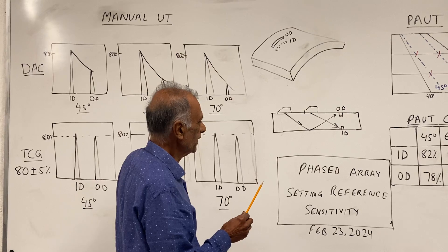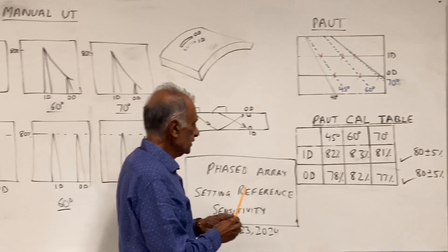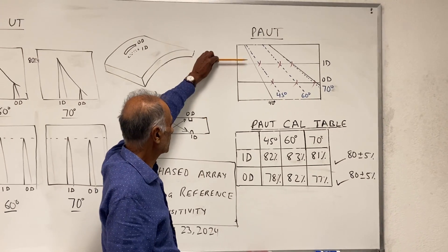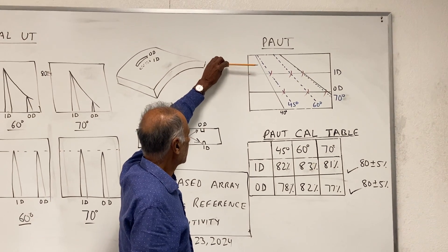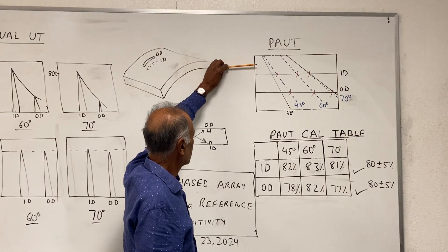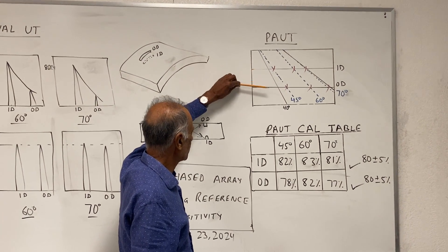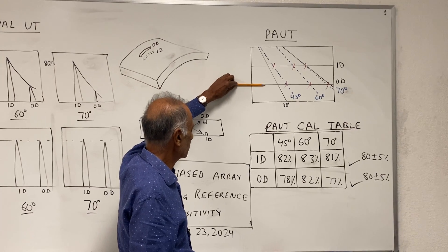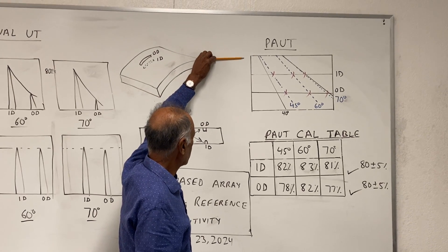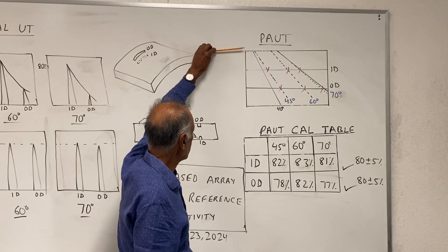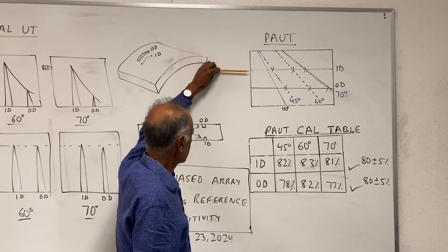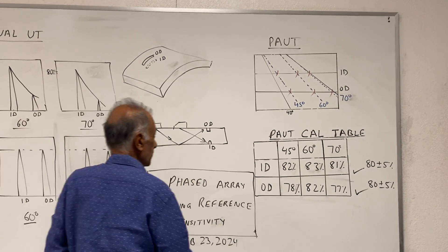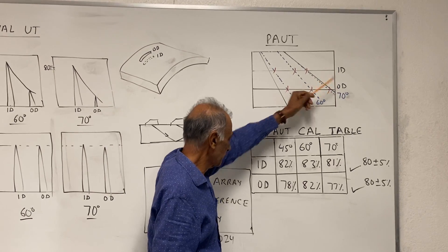In the PAUT, you have the PAUT screen here and you can see the ID and then the OD shows up here. This is basically your depth going from 0 to ID and then back to OD here, which is mentioned right here: ID and OD.